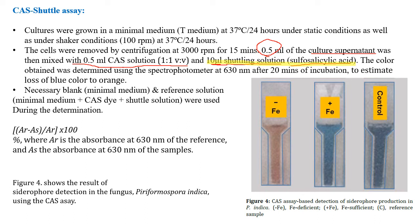The color obtained is determined using a spectrophotometer at 630 nm after 20 minutes of incubation. This incubation time allows the CAS solution and sulfosalicylic acid to react and produce a color change detectable by the spectrophotometer.